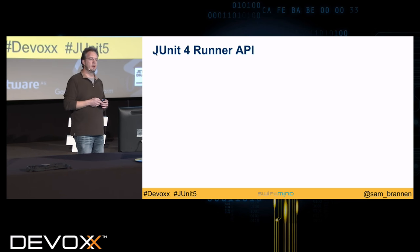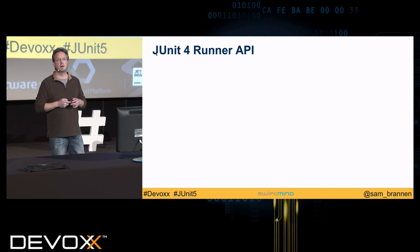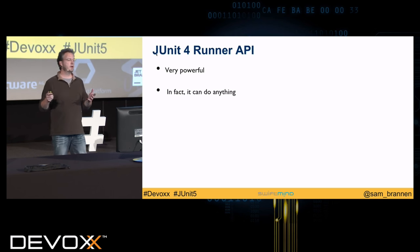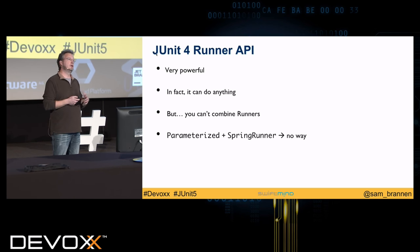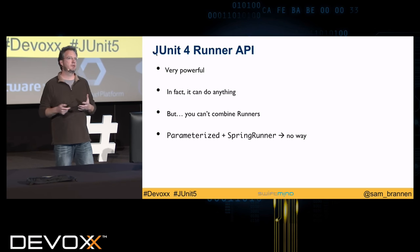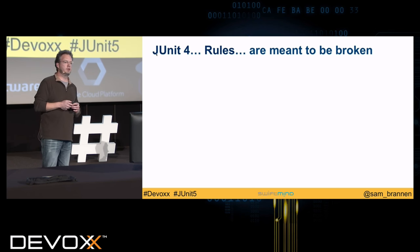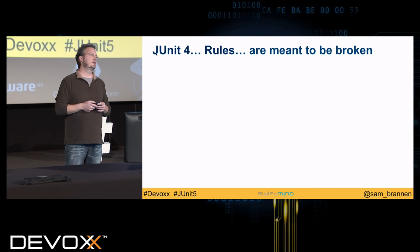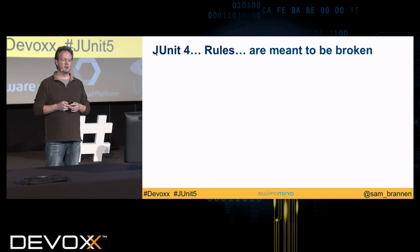How many people know about the runner API in JUnit? Maybe half. You might have seen it from Mockito or Spring. The runner API is very powerful — it can do anything — but you can't combine runners. They're not composable. So if you wanted to use the parameterized runner for parameterized tests with JUnit 4 and Spring support in its runner, it's just not possible, because you can only say 'run with' one thing. You can't say 'run with' two things. There's also the evolution to JUnit 4 rules — a JUnit 4 rules slide that you can read three or four different ways, including 'JUnit 4 rules are mentally broken,' and I would say they actually have always been broken.